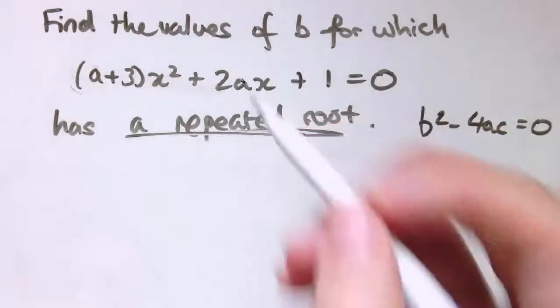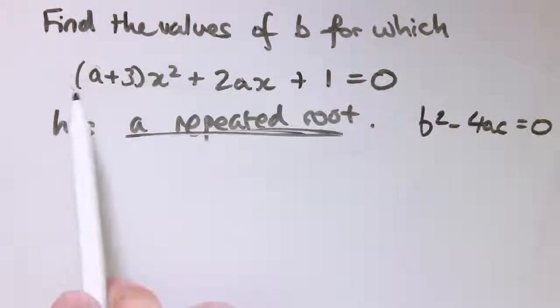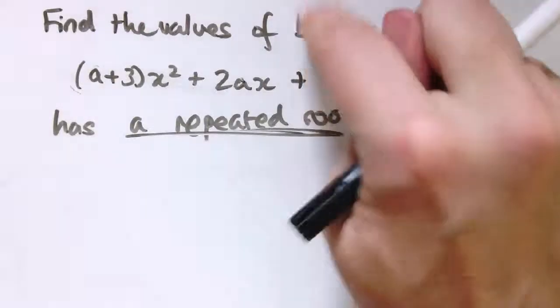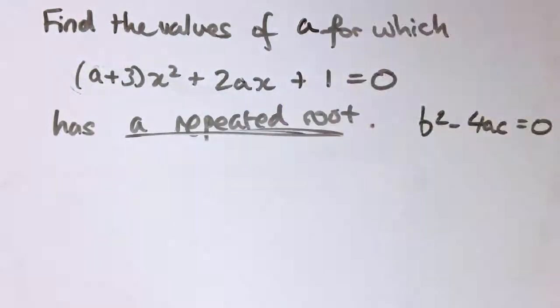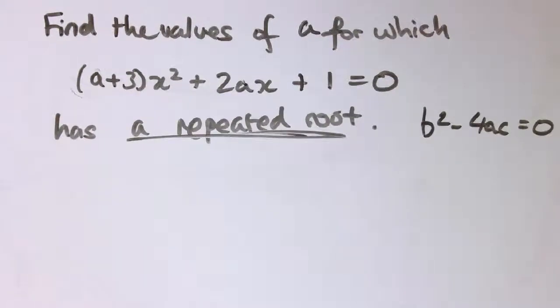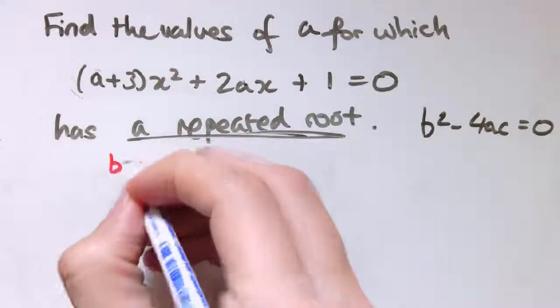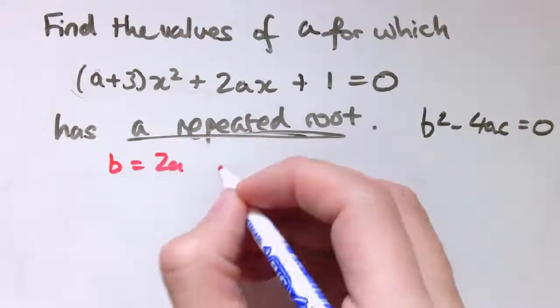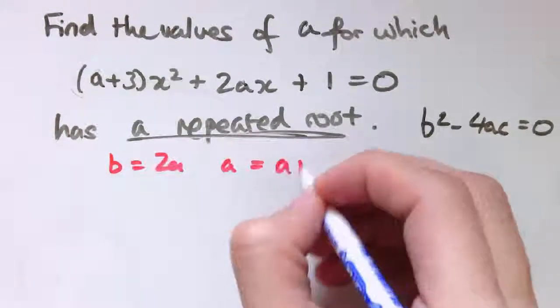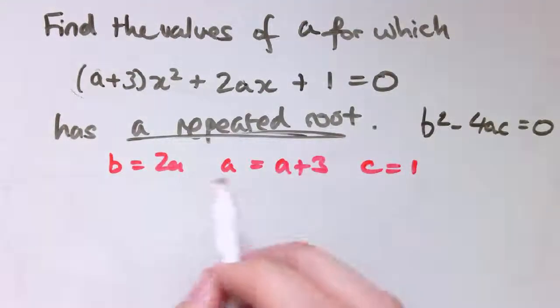Or I could make a kind of super quadratic equation question like this. For what values of a would a plus 3 lots of x squared plus 2ax plus 1 equals 0 have a repeated root? Again, I need b squared minus 4ac equals 0. Now here, sometimes algebra gets a bit confusing. The b from the quadratic equation is here 2a. The a from the quadratic equation is a plus 3, and c is 1.